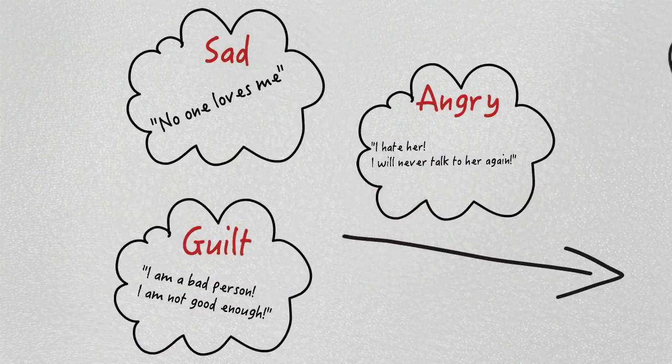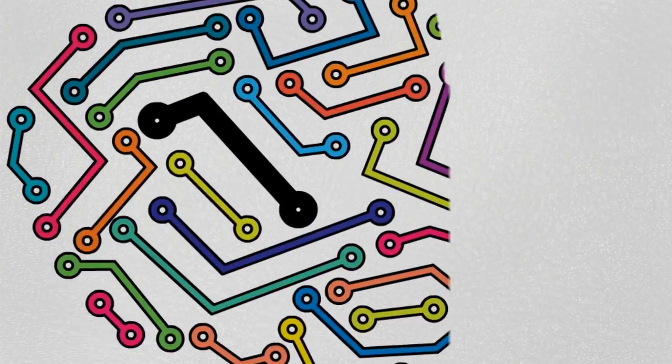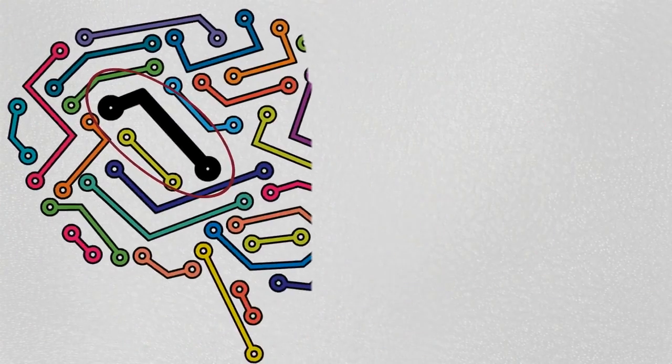This happens because we are not aware that we are controlled by unconscious emotions. In this unconscious part of our mind, neural connections are strong.